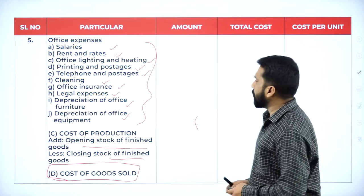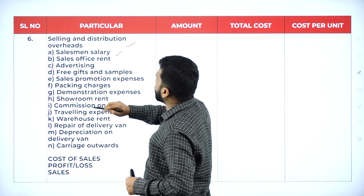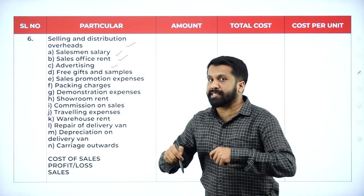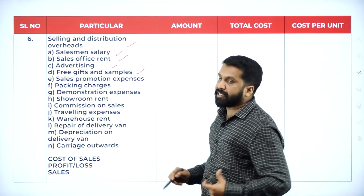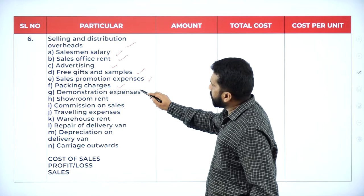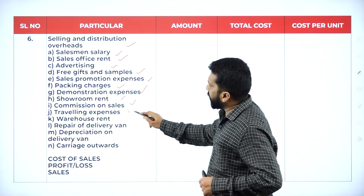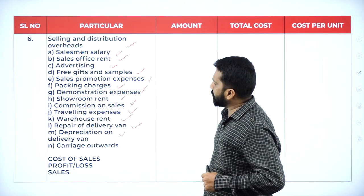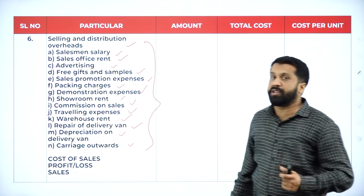Under selling and distribution overhead: salesman salary, sales office rent, advertisement, gifts and samples, sales promotion expenses, packing charges, demonstration expenses, showroom rent, commission on sales, travelling, warehouse charges, repair of delivery van, depreciation of delivery van, carriage outward. These are the selling and distribution expenses.